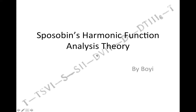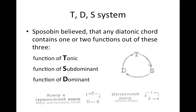Today let's look at Sposobin's harmonic function analysis theory. Sposobin believes that for any diatonic chord, it must contain one or two functions out of these three: T for tonic, S for subdominant, and D for dominant.